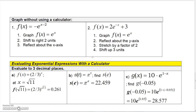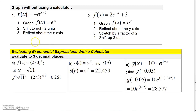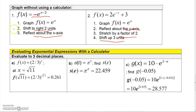You can also graph transformed versions of e to the X. To graph negative e to the (X minus 2), take e to the X, shift it right 2 units, and reflect it about the x-axis. For another function, the negative X reflects it about the y-axis, multiplying by 2 stretches it by a factor of 2, and adding 3 shifts it up 3 units.